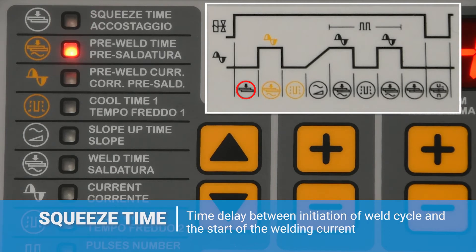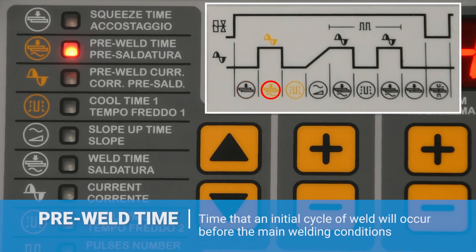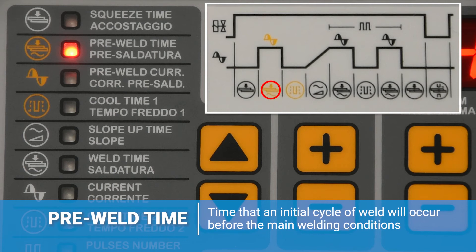The second parameter is the pre-weld time and this can be set between 0 and 99 cycles. This is the amount of time that the initial cycle of weld will occur before the main welding condition, similar to a preheat. If this value is set to 0, then no pre-weld will occur.